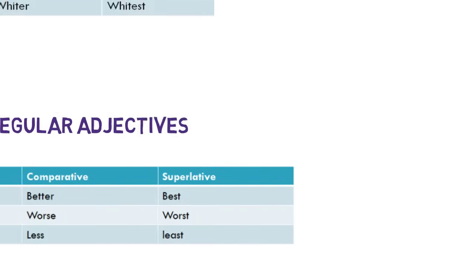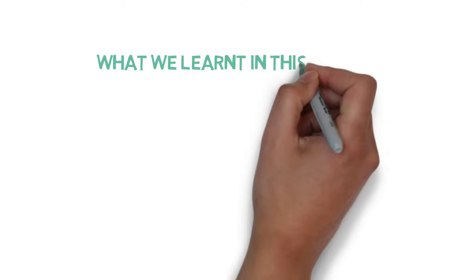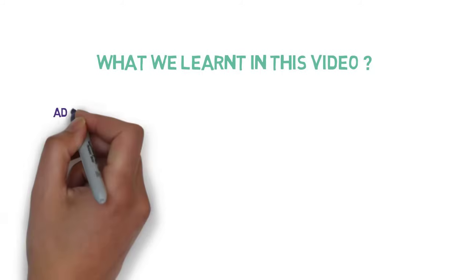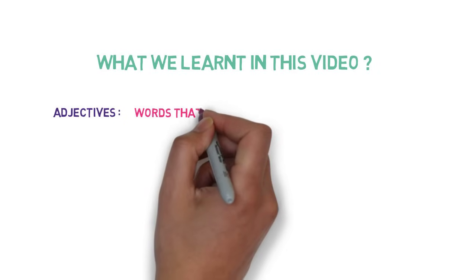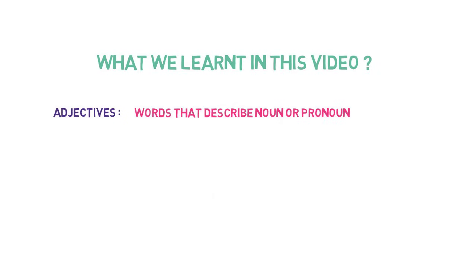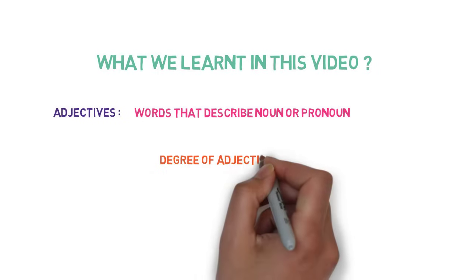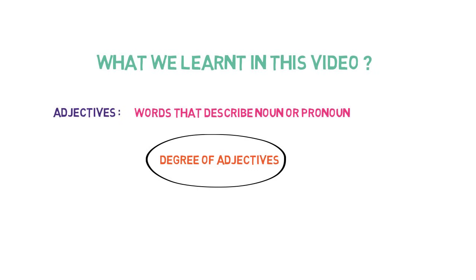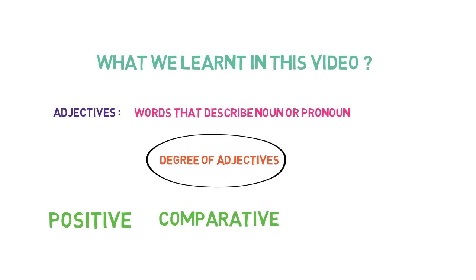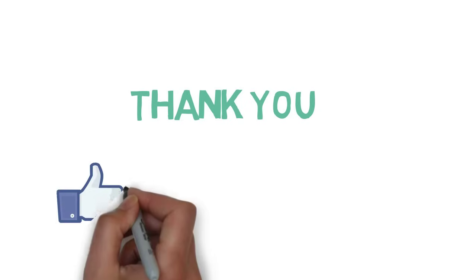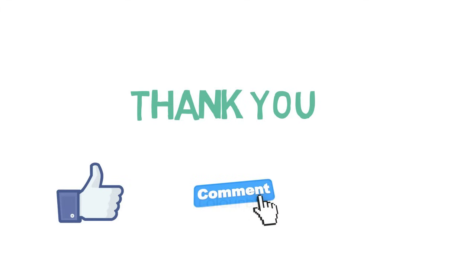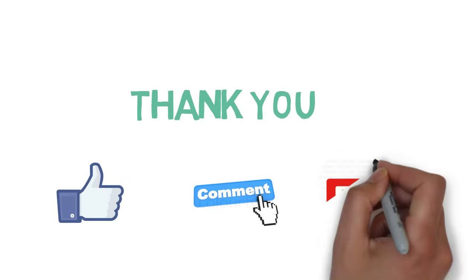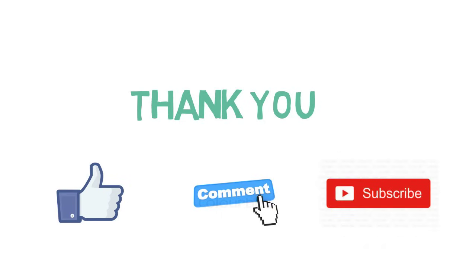That's all for this video. Let's quickly go through what we learned: we learned about adjectives — adjectives are words that describe a noun or pronoun. Then we discussed the degrees of comparison for adjectives, which are positive, comparative, and superlative. Thank you for watching. If you liked the video, please hit the like button. If you have any questions or suggestions, please write in the comment section. Do share the video so others can learn, and subscribe to the channel for regular updates.